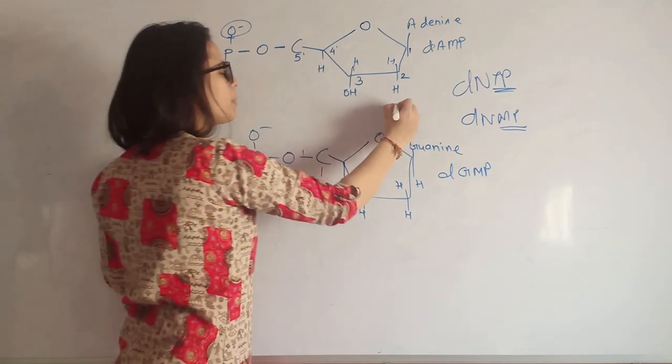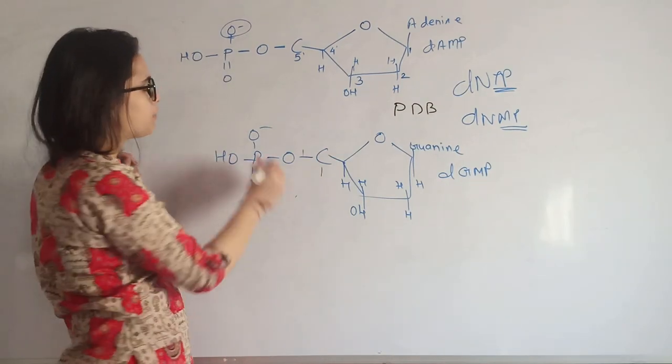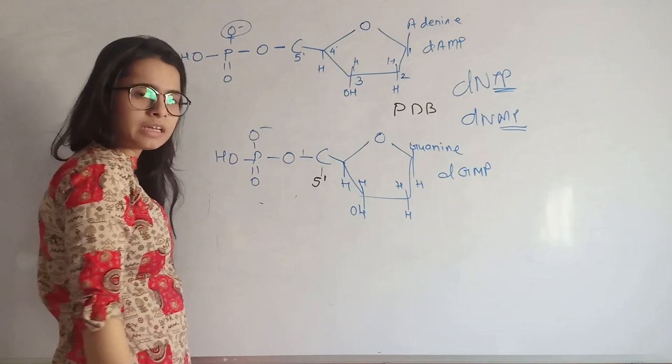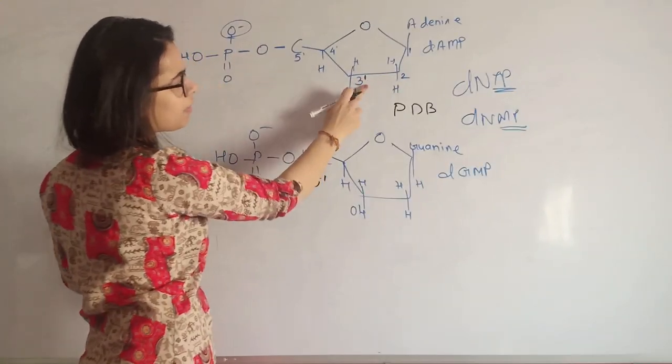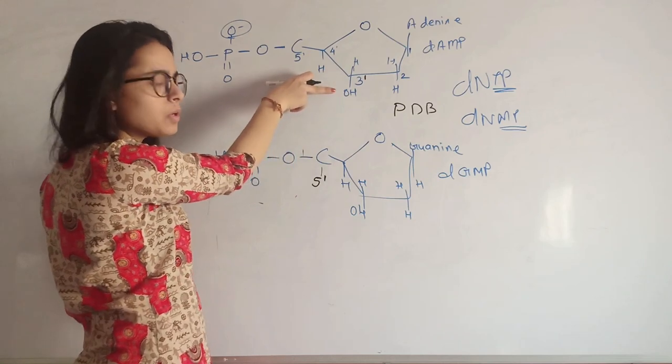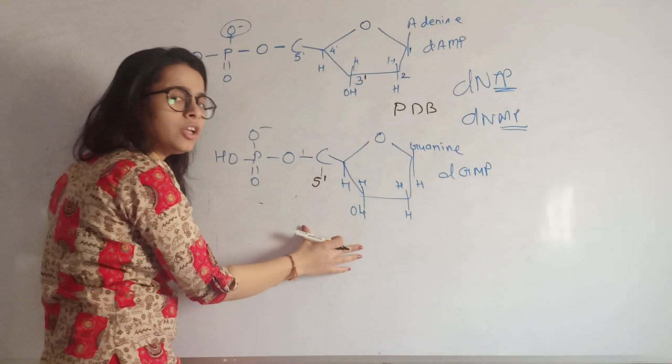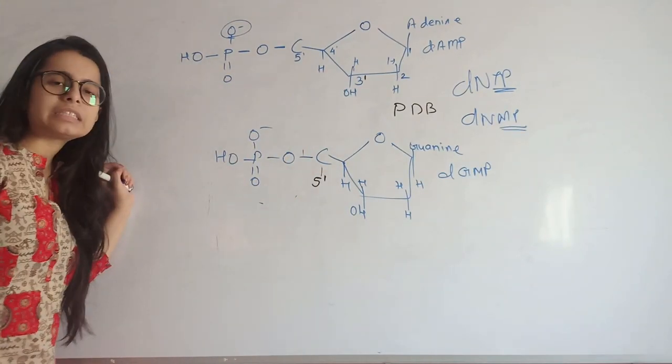It has a phosphate group here, and this bond we are naming as PDB, phosphodiester bond, is going to take place between the five prime carbon atom and three prime hydroxyl group of another nucleotide.